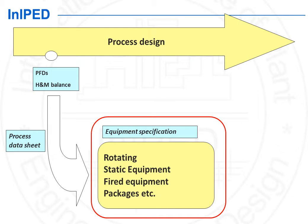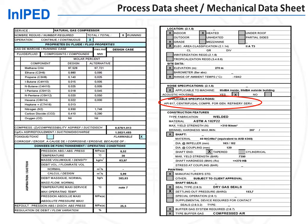The four different specialists all start their work from the functional requirements defined by process and shown on the equipment process data sheet. To these requirements must be added information specific to the site environment, as well as specifications to ensure the high quality and dependable service of the equipment. This is done by issuing the mechanical data sheet. Compared to the process data sheet, which only contains functional requirements, the mechanical data sheet contains additional design and construction information.